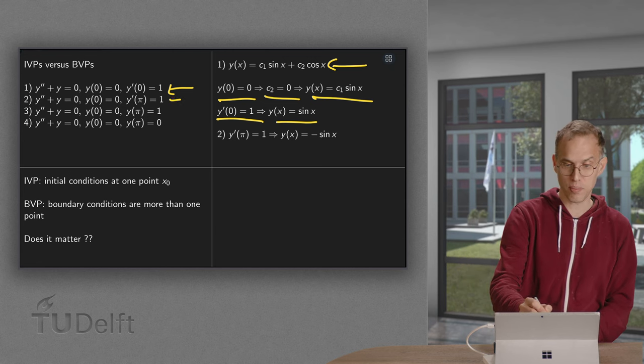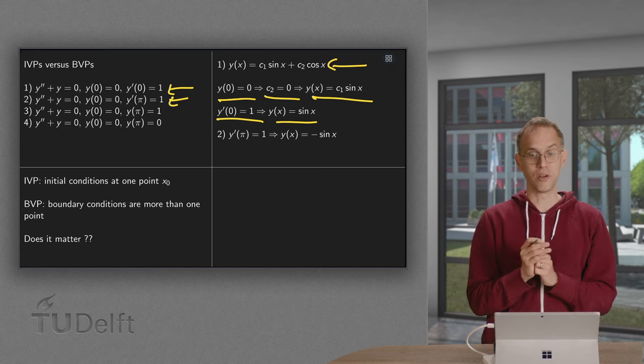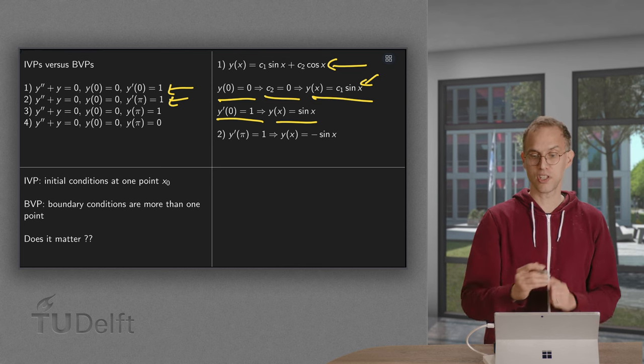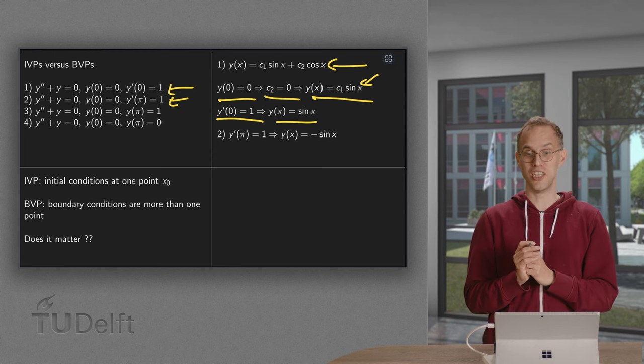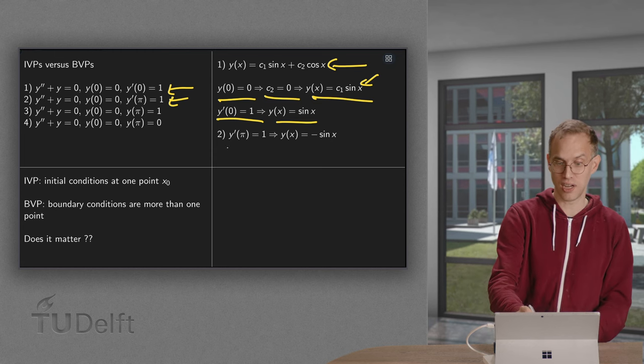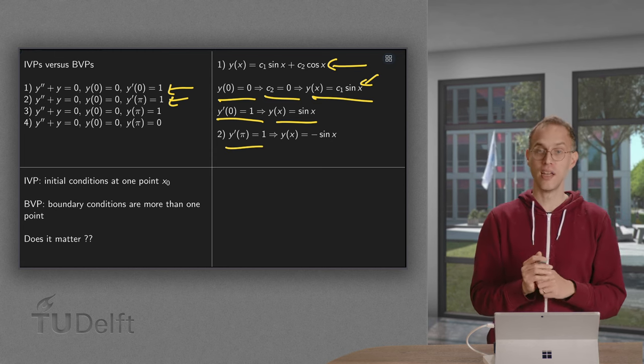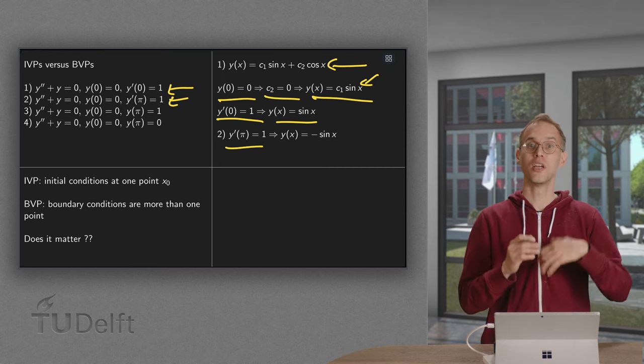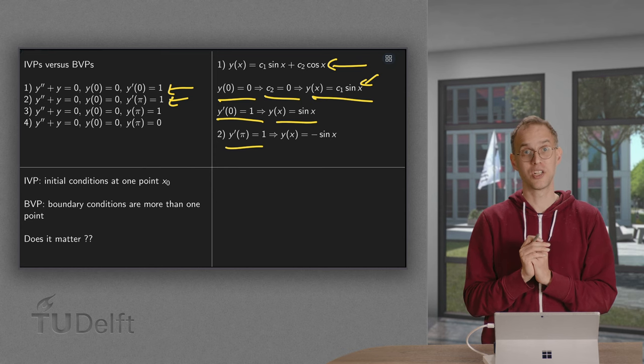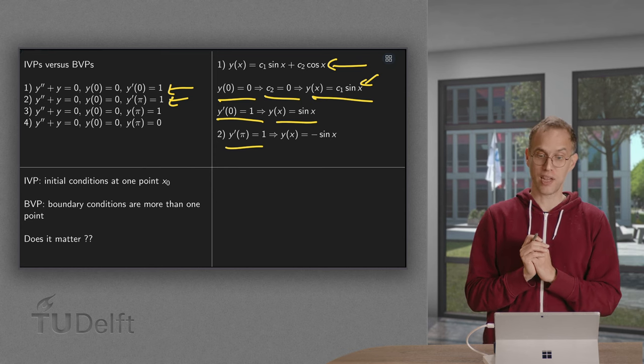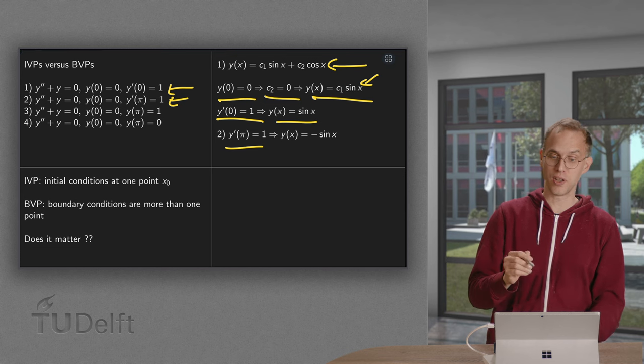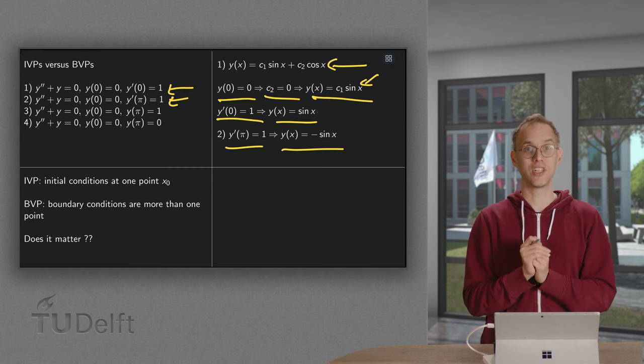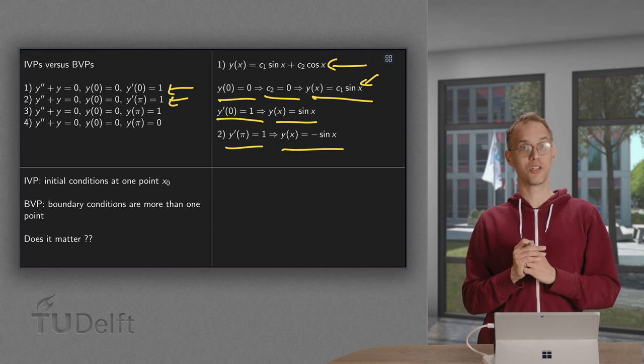Moving on to the second problem. Well, the first part goes exactly the same, of course. So we end up again with y of x equals c1 times sine x. But then the second condition is different. The second condition now is y prime of pi. Well, y of x equals c1 sine x. Y prime equals c1 times cosine x. So y prime of pi equals minus c1. Which means that c1 equals minus 1. And now we find y of x equals minus sine x. So again, one solution.